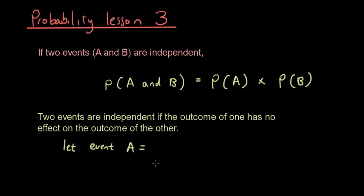Event A is tossing a coin and getting a tail. Event B is throwing a die and getting a four. Now, these two events are independent, because getting a tail from a coin is going to have no effect on what you get from a die.